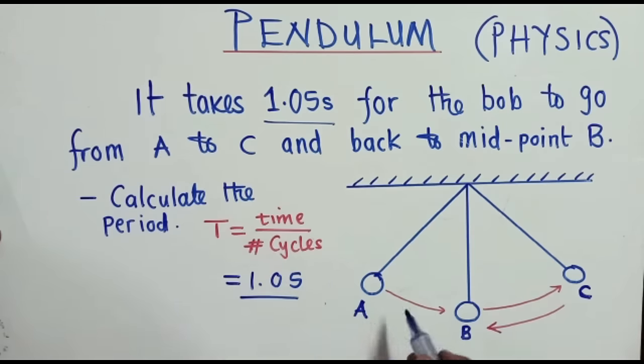So how many cycles? If it reached at A, we would have said it's 1. If it went from A to B, B to C, C to B, B to A, we would have said it's 1. Now, it's ending here. So how many quarters do we have? It's 3 quarters. So we're just going to say 3 over 4.